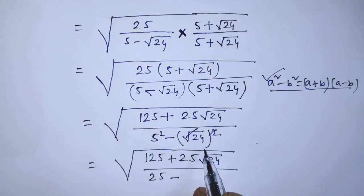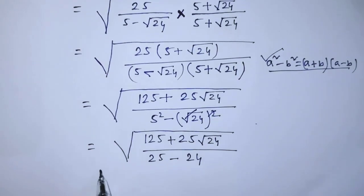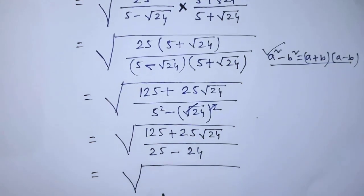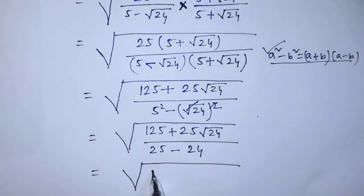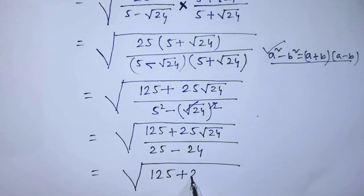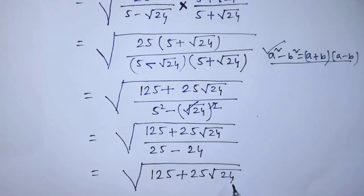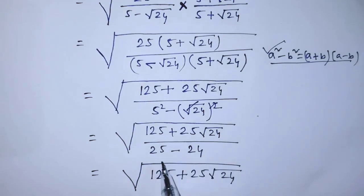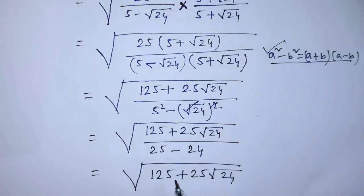After canceling square root and squares, the denominator becomes 25 minus 24, which equals 1. So we only need to write the numerator: square root of 125 plus 25 times square root of 24.